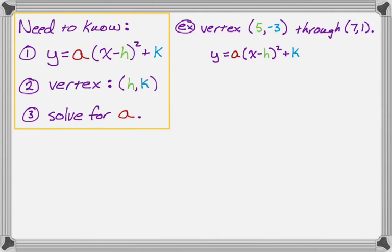So let's first substitute in the values. So y equals a, x minus, and then h we know from the vertex is 5, because that's the x coordinate of the vertex, quantity squared plus, and then the y coordinate of the vertex is k, so it's going to be the quantity negative 3. There's a little bit of stuff we can simplify here. We can change that plus negative into just minus 3.